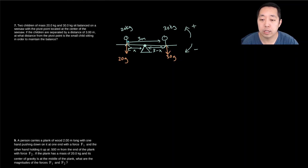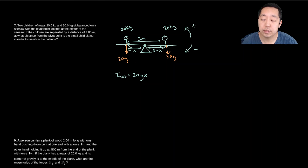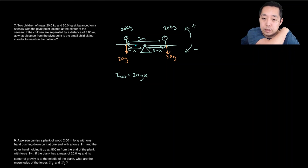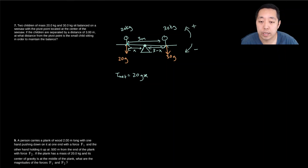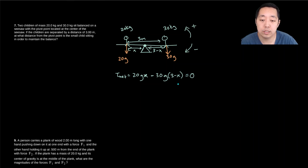Each child exerts a downward force equal to their weight (mg). The 20 kg child's torque is +20g × x (counterclockwise), and the 30 kg child's torque is −30g × (3 − x) (clockwise). Since the seesaw is balanced, the net torque must equal zero.